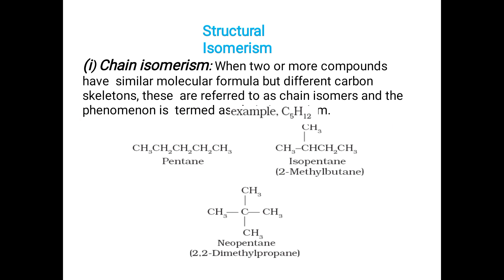First is structural isomerism. Under structural isomerism we will see chain isomerism. Chain isomerism can be defined as when two or more compounds have similar molecular formula but different carbon skeletons. These are referred to as chain isomers and the phenomenon is termed chain isomerism.